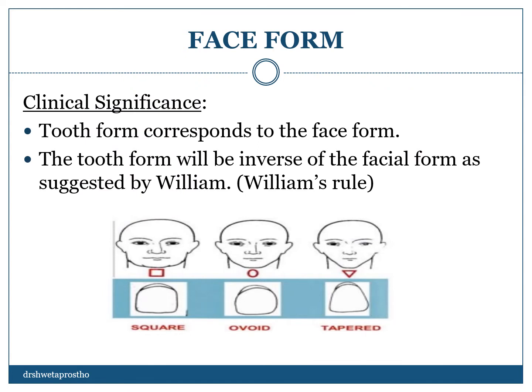The question arises: why do we need to see the face form? The examiner asks you the significance of face form. The tooth form selected for the teeth corresponds to the face form. William's rule is often asked during your chairside viva. He devised the law of harmony, which suggested that the tooth form will be the inverse of the facial form, as we can see in the picture.